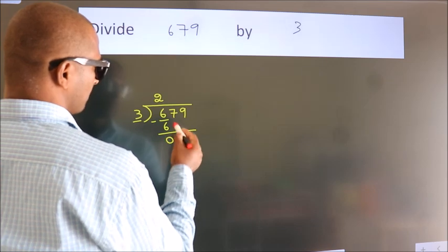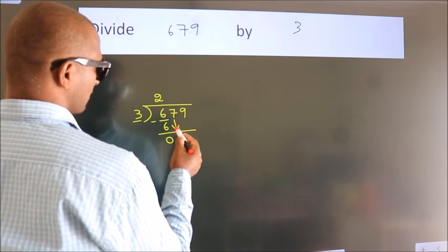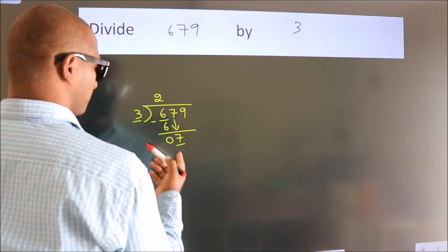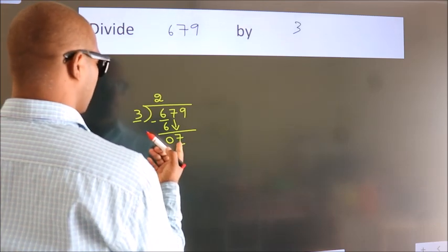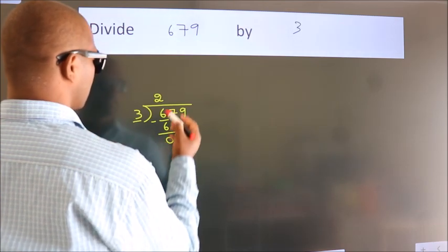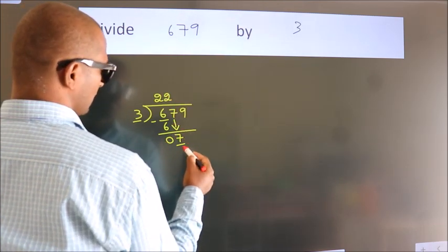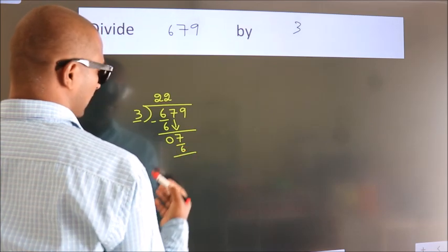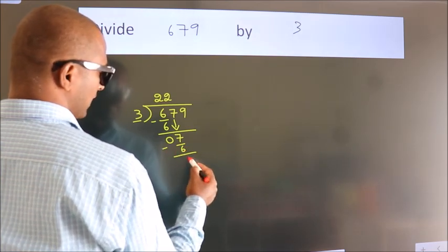After this, bring down the beside number. So 7 down. So 7. A number close to 7. In 3 table is 3 2s, 6. Now we subtract. We get 1.